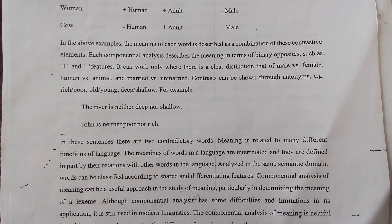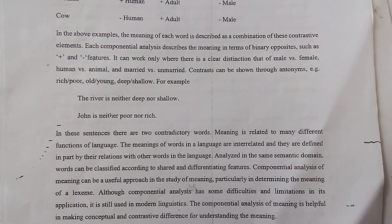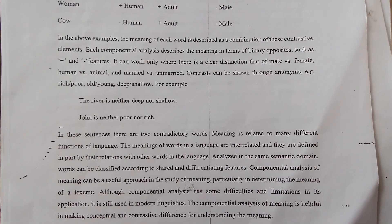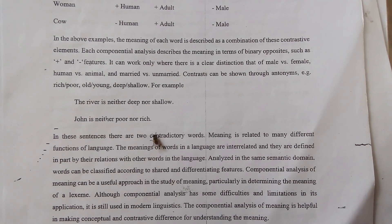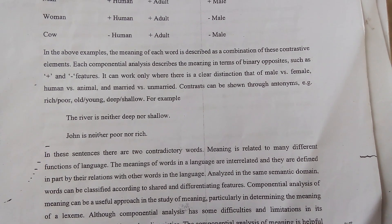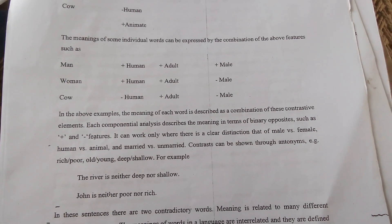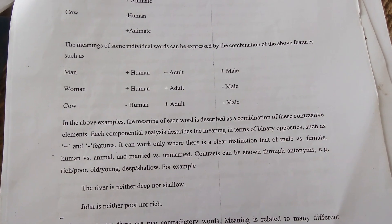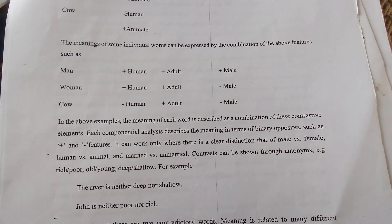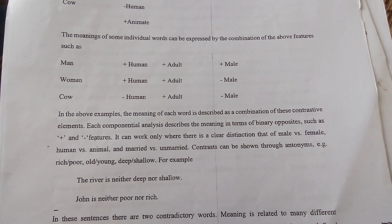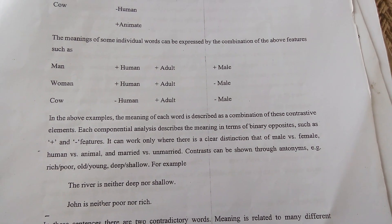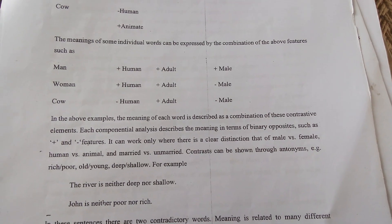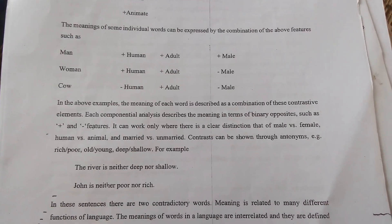There is also the example: 'The river is neither deep nor shallow' and 'John is neither poor nor rich.' So this is the end of the video and the end of the topic. I hope you liked this topic. In the upcoming video I will share more details regarding this topic with more examples and more theories. Like, share and subscribe.